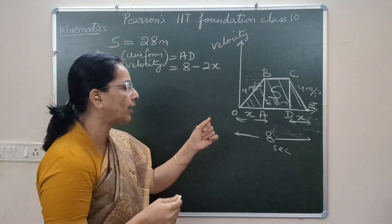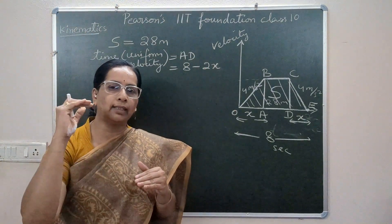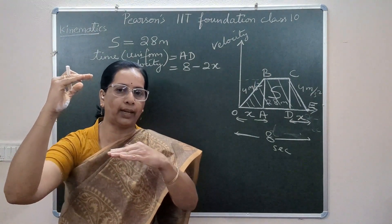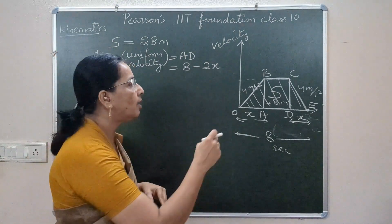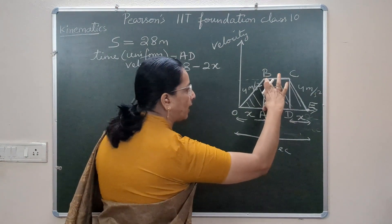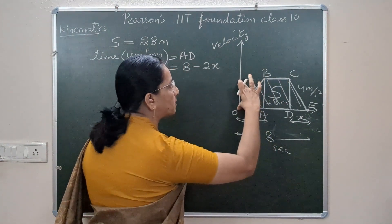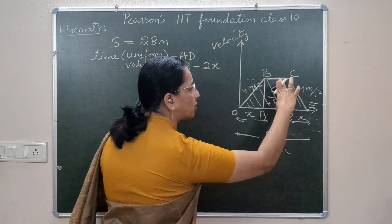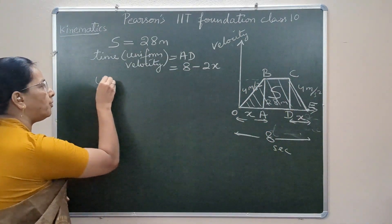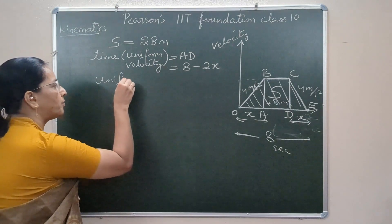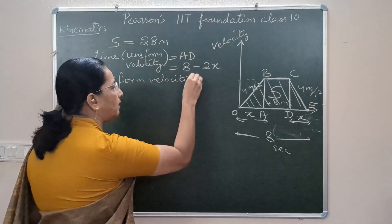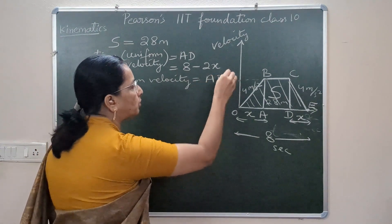The period AD on the graph represents the time at uniform velocity, which is 8 minus 2X. Once we know X, we can determine how long the lift stayed at uniform velocity. We also need to find the uniform velocity AB — that is, the velocity value at which the lift traveled after acceleration and before retardation. So we need to find both AD (duration) and AB (uniform velocity).